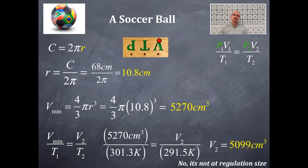This is not at regulation size because the minimum volume that I have to have is 5,270 cubic centimeters. That would give me that circumference of 68 centimeters. And right now the circumference is not 68 centimeters since the volume is smaller. That is, the temperature went down and the volume went down.